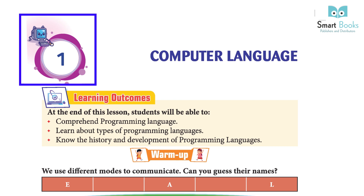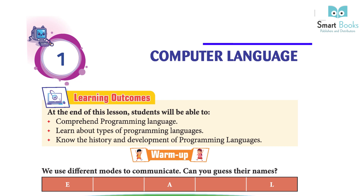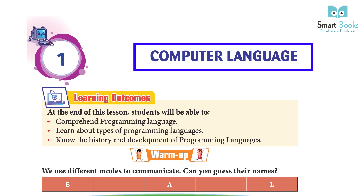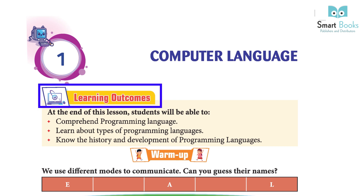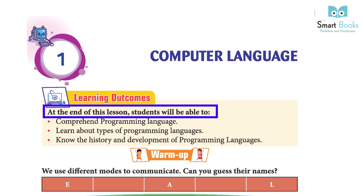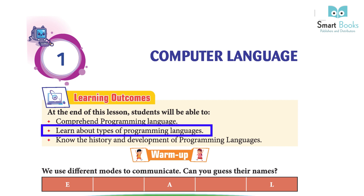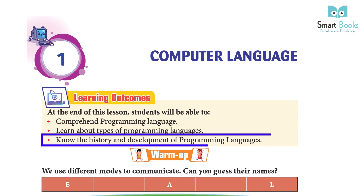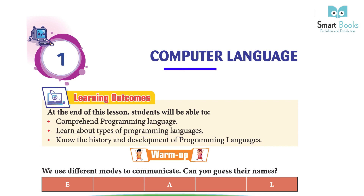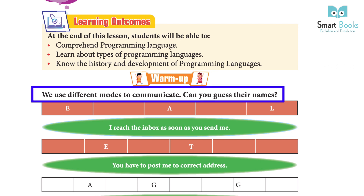Chapter 1: Computer Language. Learning outcomes: at the end of this lesson, students will be able to comprehend programming language, learn about types of programming language, and know the history and development of programming language.